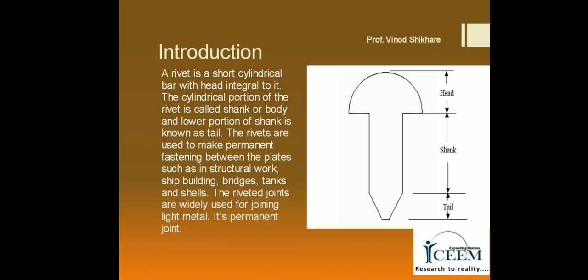According to Indian standard specifications, rivet heads are of various types. Rivet heads for general purposes are specified by IS 2155-1982 and IS 1929-1982, covering diameters from 12 mm to 48 mm. Rivet heads used for boilers are specified by IS 1928-1978. To get dimensions of the head of different rivets, we use the handbook provided by the Indian standard.